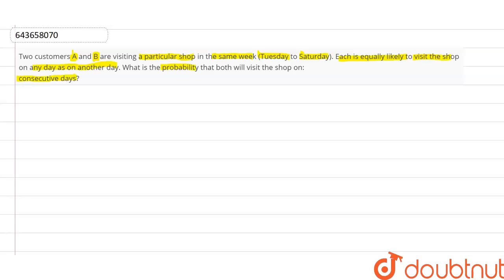Now, let us find out the sample space for this. I will be taking Tuesday as T, Wednesday as W, Thursday as Th, Friday as F and Saturday as S.